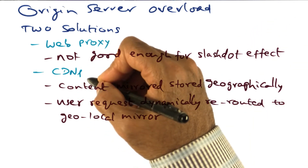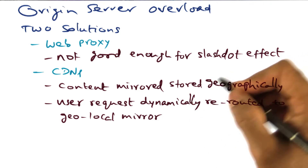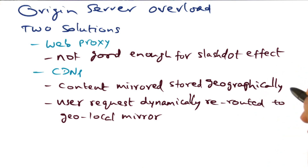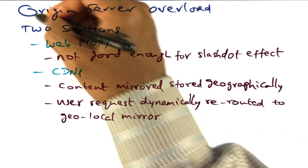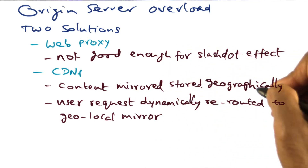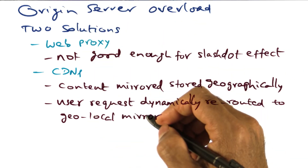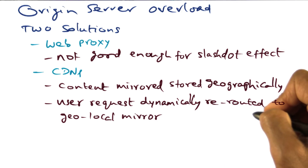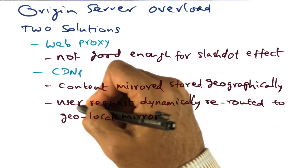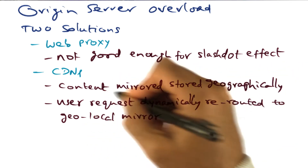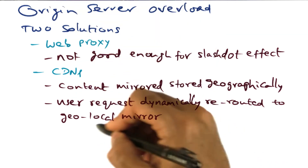And this is where content distribution networks come into play. The idea is that the content is automatically mirrored from the origin server at selected geographical locations. And those locations are constantly getting updated from the origin server, so that going to any of the mirrored content is the same as going to the origin server. Then, in the content distribution network, depending on the geographical area from which a particular user request originates, the user request is dynamically rerouted to the geo-local mirror of the content so that the origin server need not be overloaded.